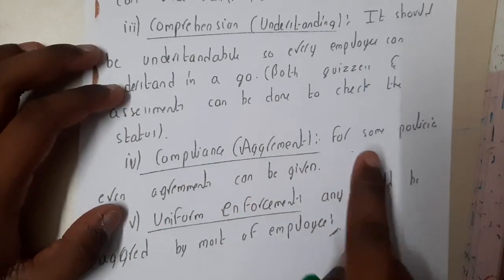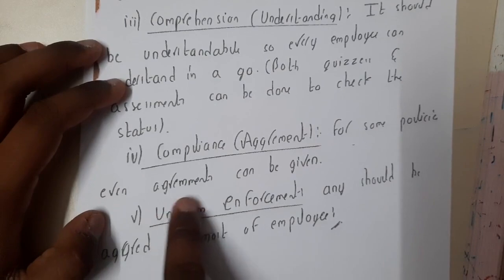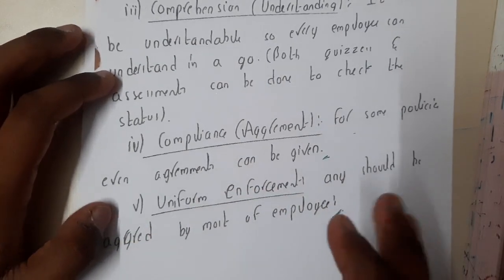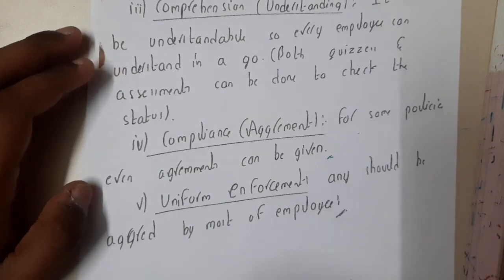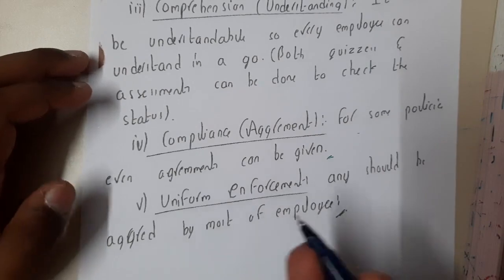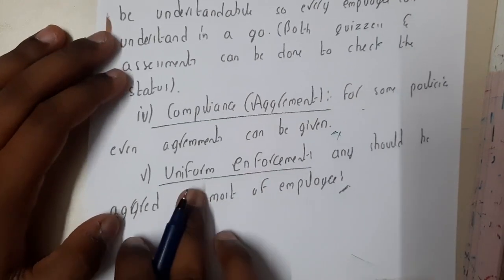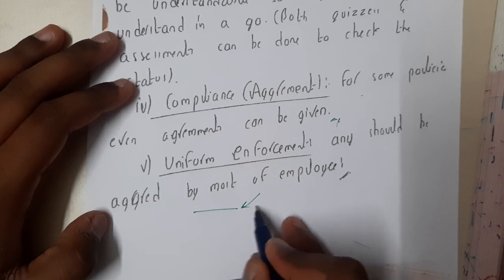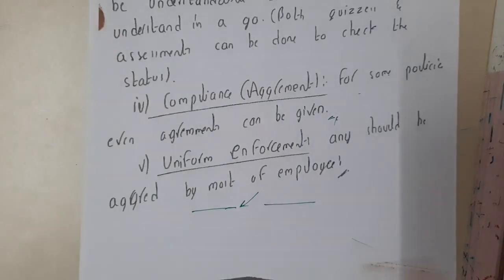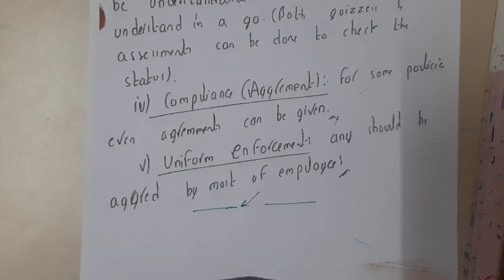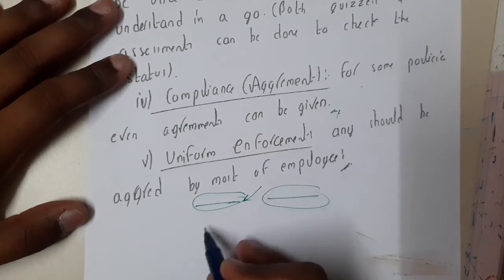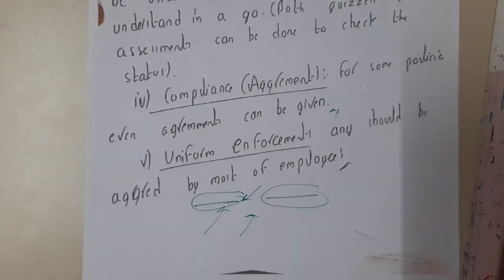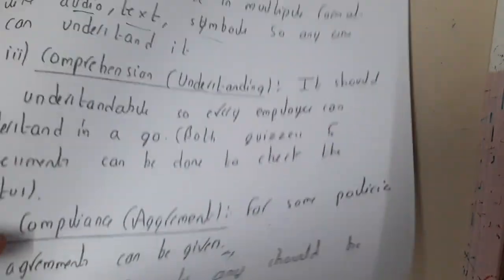The next criterion is compliance, which means agreement. For some practices, written agreements can be taken — for example, if there is a salary hike, you need a written agreement so it cannot later be dismissed as a joke. Finally, there is uniform enforcement: if two employees are at the same level, policies must be applied equally to both — they should always be enforced in a uniform format.